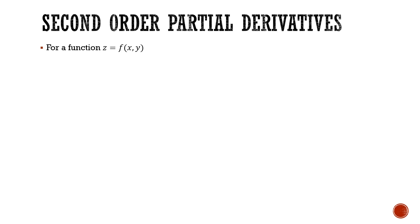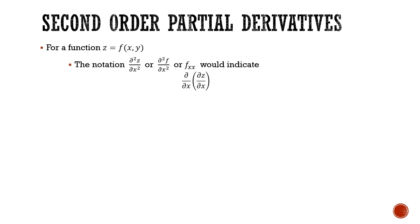Let's introduce the notation for this and jump into some examples. For a function z = f(x, y), we have the notation ∂²z/∂x², or alternatively ∂²f/∂x², or f sub xx. All of these are interchangeable notations meaning we take the first derivative with respect to x, and then take the derivative a second time with respect to x.